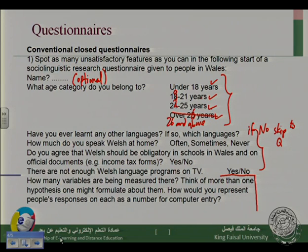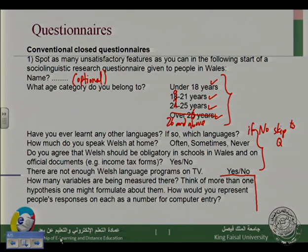'Do you agree that Welsh should be obligatory in schools in Wales and on official documents, income tax forms? Yes / No.' The problem here is very deep. Starting with 'Do you agree' is like a leading question — you are leading your participants to agree with you. This is called a leading question, because it unconsciously leads your participants to agree with you. One disadvantage with questionnaires is that sometimes participants give you what you want.